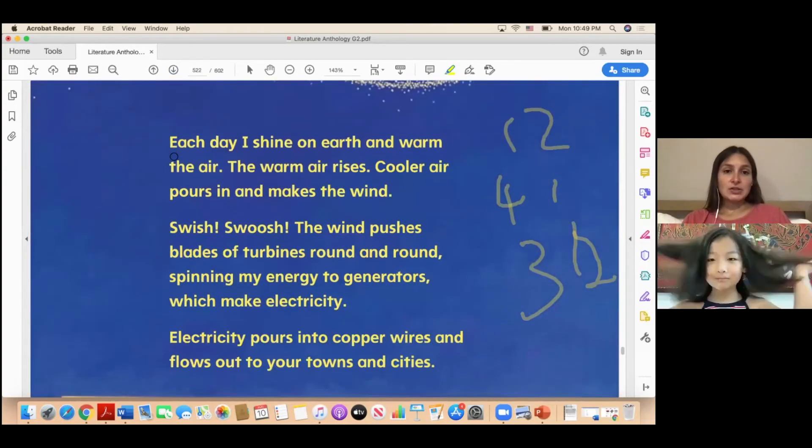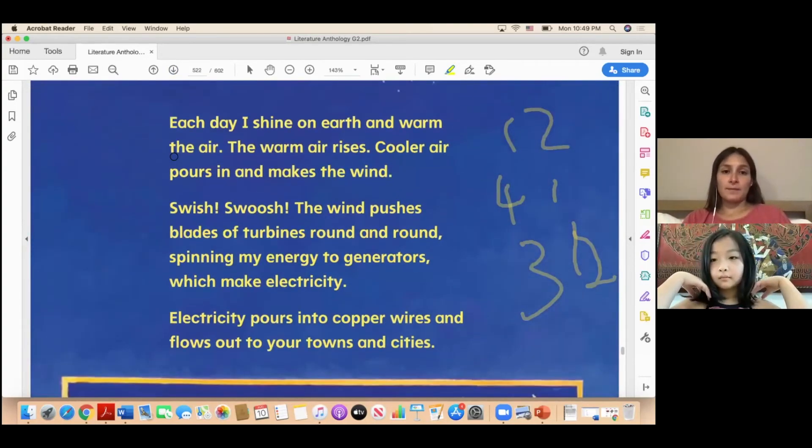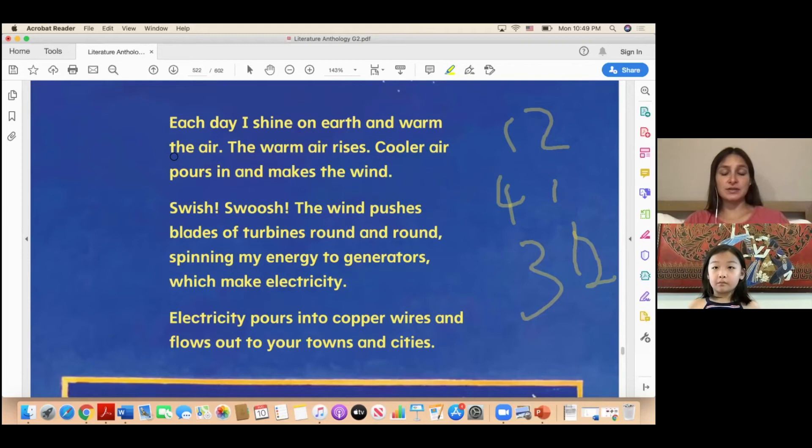Okay, so: Each day I shine on earth and warm the air. The warm air rises. Cooler air pours in and makes the wind. Swish, swoosh! The wind pushes blades of turbines round and round, spinning my energy to generators which make electricity. Electricity pours into copper wires and flows out to your towns and cities. So each day I shine on earth and warm the air, the warm air rises, cooler air pours in and makes the wind.